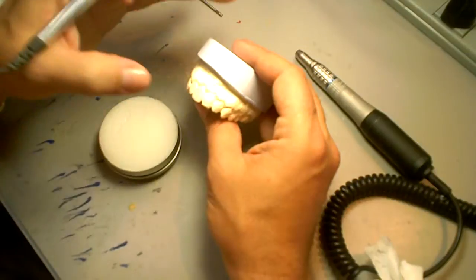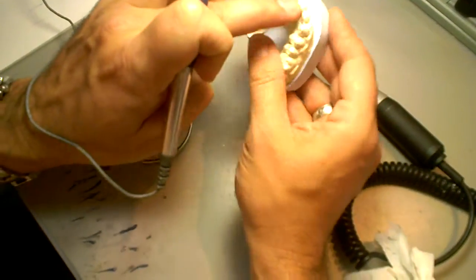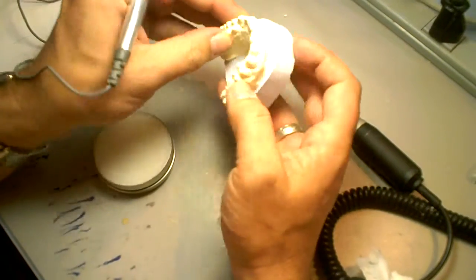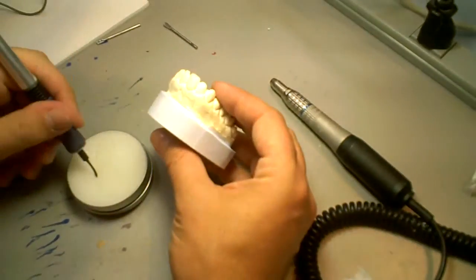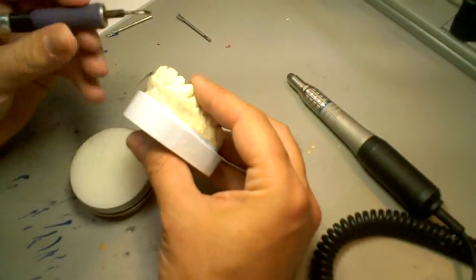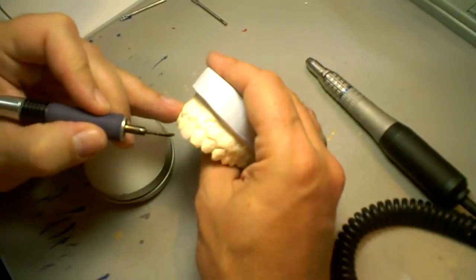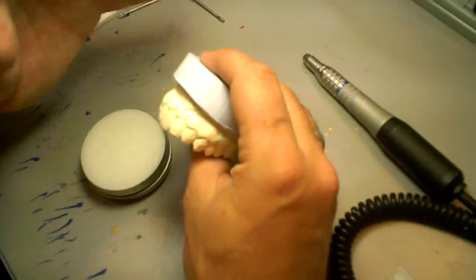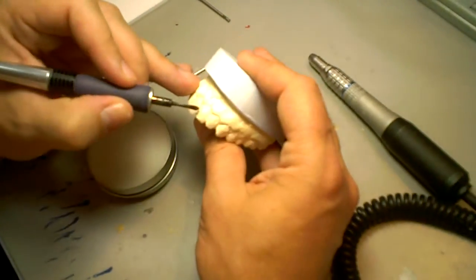So I have my first central pretty much where I want it. Again, I look at this view. Make sure that I'm following my arch. I'm in the right position. So I'm just going to fill in little gaps. At this time, I'm not going to contour it. Since I'm fresh and I'm seeing what I'm doing, I'm going to start the next central, because those are very important that they match perfectly.